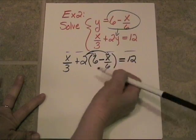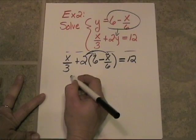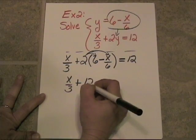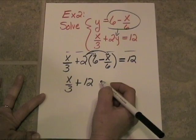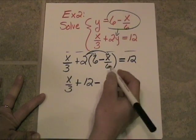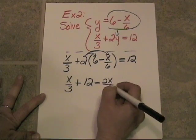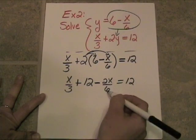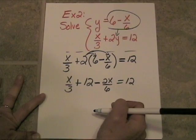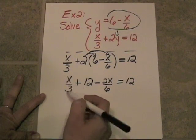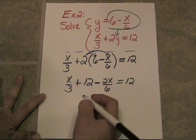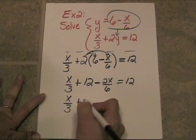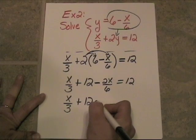All right. Let's now go ahead and distribute the 2 and then see if we can clean it up a bit. x over 3 plus 2 times 6 is 12. Then 2 times the opposite of x over 6 is 2x over 6. And that's all equal to 12. Well, 2x over 6, that will just reduce to 1 third. And you know what? You've got a 1 third here as well.